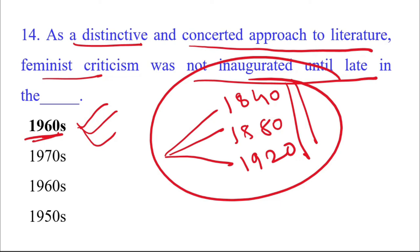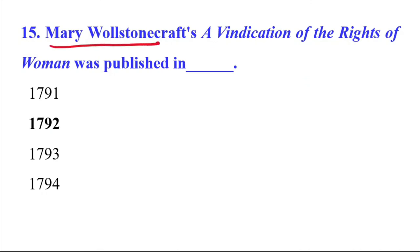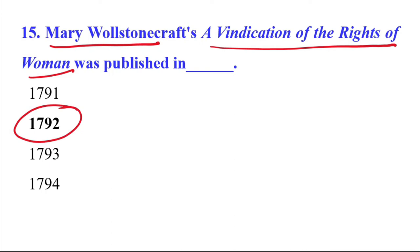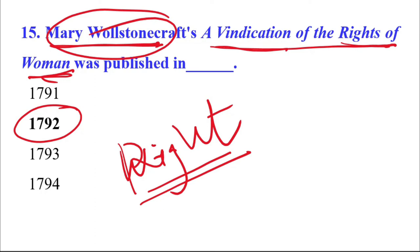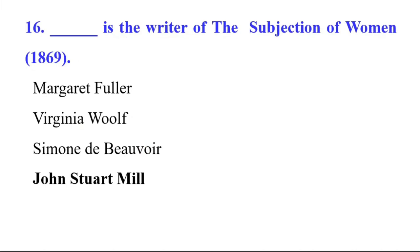Mary Wollstonecraft's A Vindication of the Rights of Women was published in 1792. It was in that era that Mary Wollstonecraft first raised her voice about women's rights and advocated for the rights that women deserved.